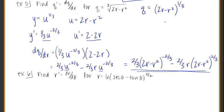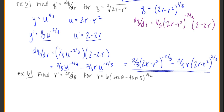If I started with the main function directly: dq/dr equals 1/3 times (2r minus r squared) to the negative 2/3, multiply by the derivative of that base, which is 2 minus 2r. Distributing 1/3 through — 1/3 times 2 is 2/3 — you get the same two terms back together. Just two ways of doing the exact same problem.